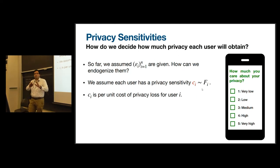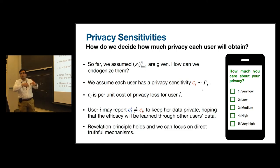So far, I just assumed that epsilon 1 to n are given. But now the question is, how should we endogenize them? One thing that comes to mind is that, for instance, you open the app to give your medical data, and they ask you how much you care about your privacy. You choose something from 1 to 5, and the platform somehow endogenizes this epsilon. This is the idea that we are going to take. We assume each user has a privacy sensitivity Ci for user i coming from distribution Fi, and we can look at Ci as a per-unit cost of privacy loss for user i. Users are going to report this privacy sensitivity, but they could report something different in the hope that maybe they get better privacy. But actually, the revelation principle here holds, and we could only focus on direct and truthful mechanisms.